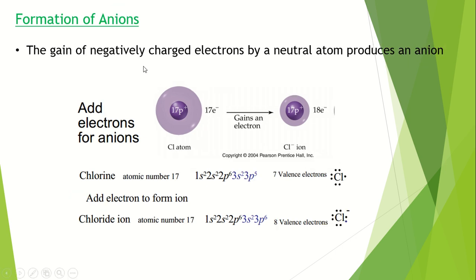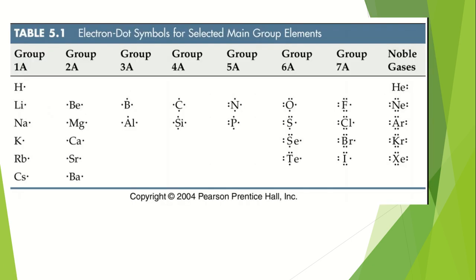This is the formation of anions. One electron is accepted by chlorine, changing its configuration to 3p6, so it bears the negative charge — this is the formation of an anion. Here is the electron dot symbol for some selected main group elements. We can see group 1A, 2A, 3A, 4A, 5A, 6A, 7A, and the noble gases, showing the number of electrons present in the outermost shell of these elements.